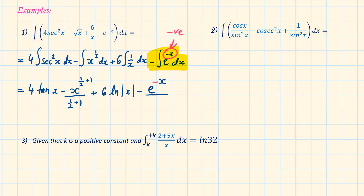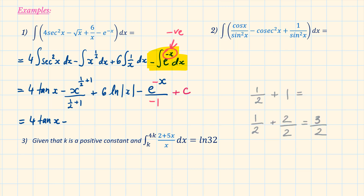The differential of minus x is minus 1, and we have a plus c as an overall constant. Simplifying further, we have 4 tan x minus two-thirds x to the power of 3 over 2 plus 6 ln x plus e to the power of minus x plus c.